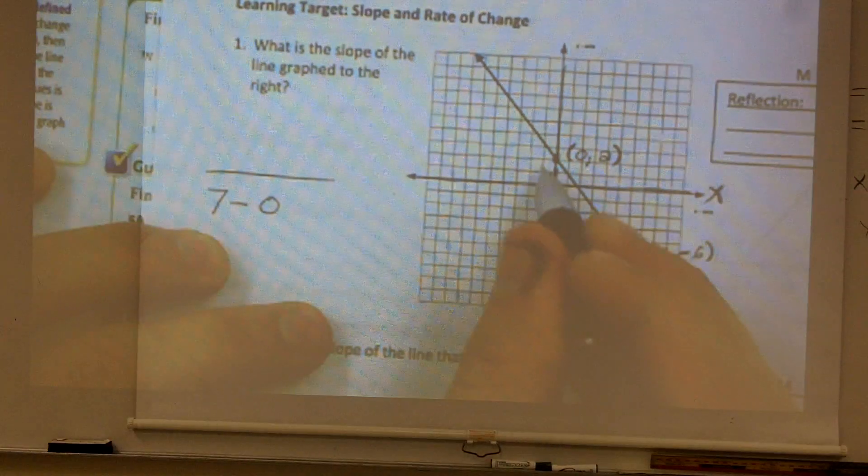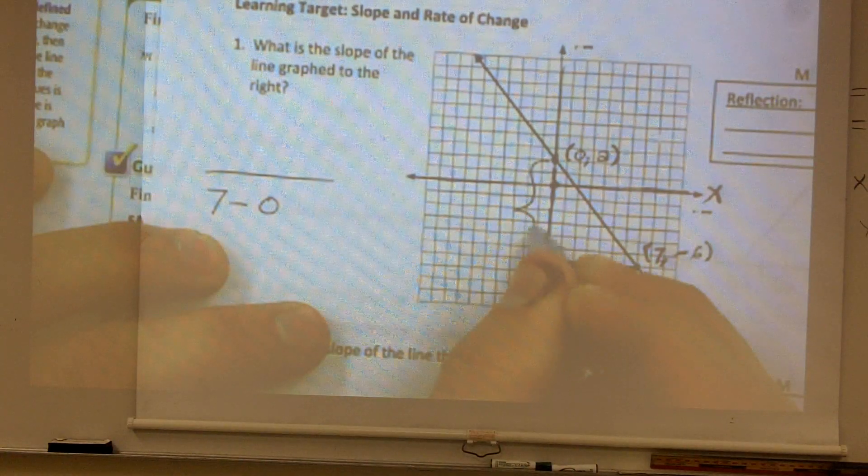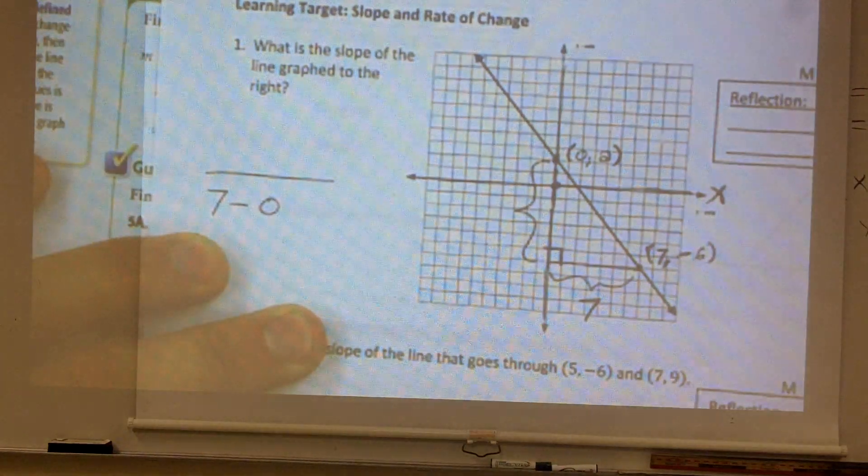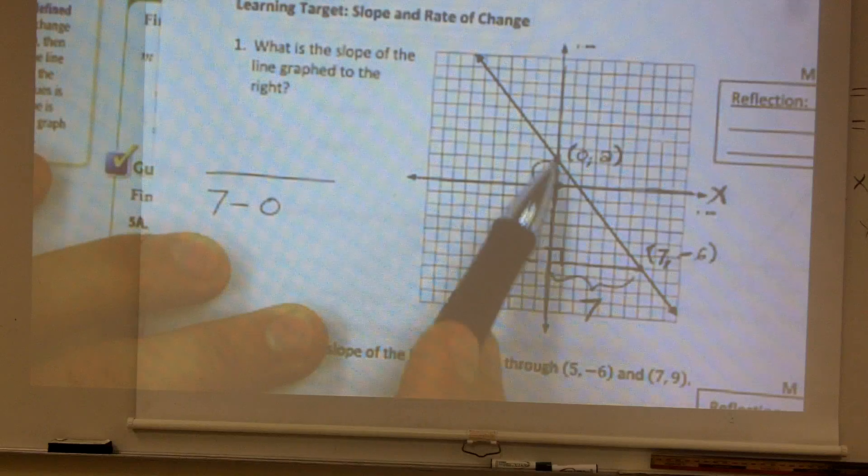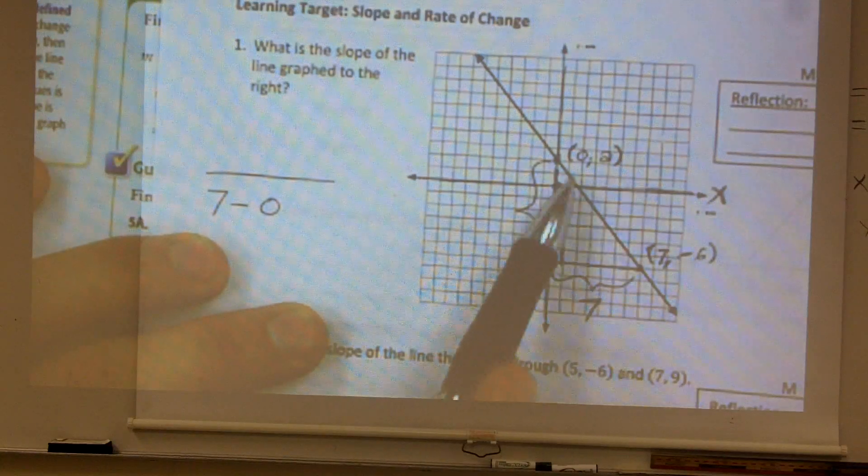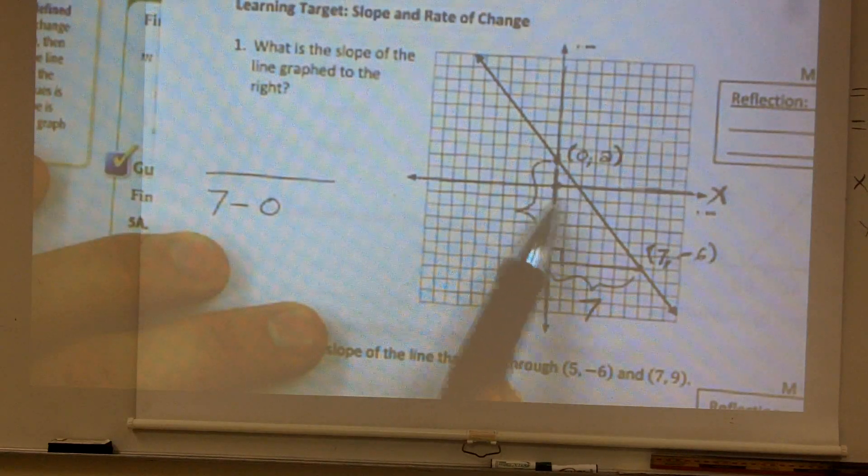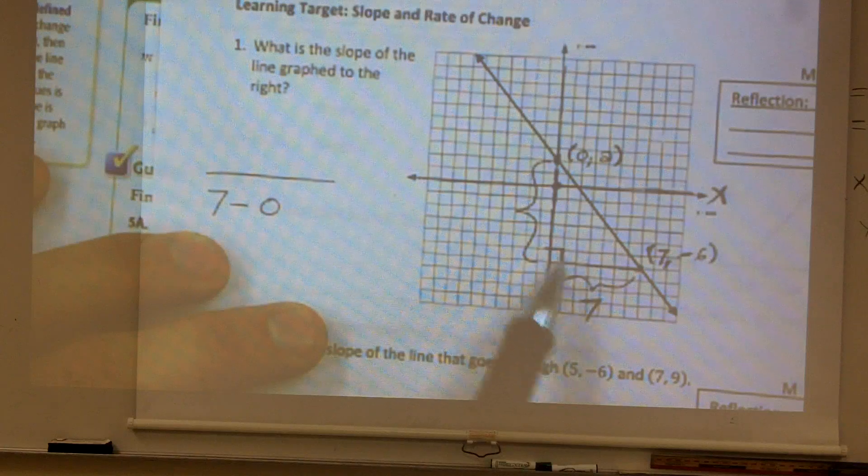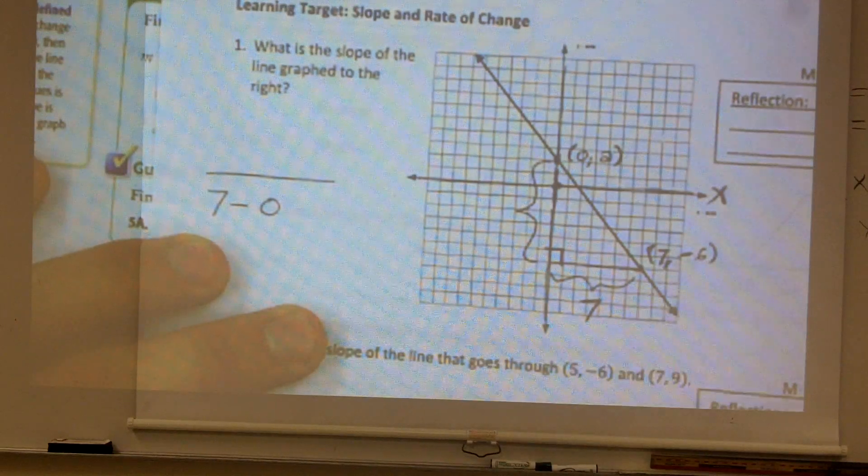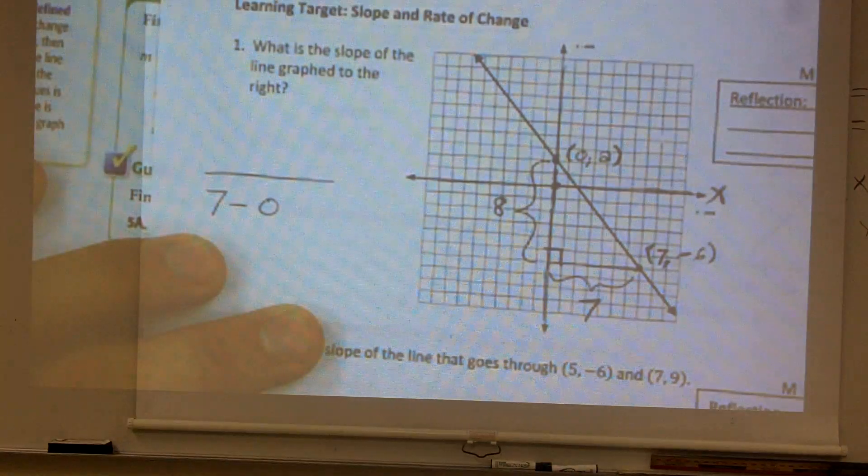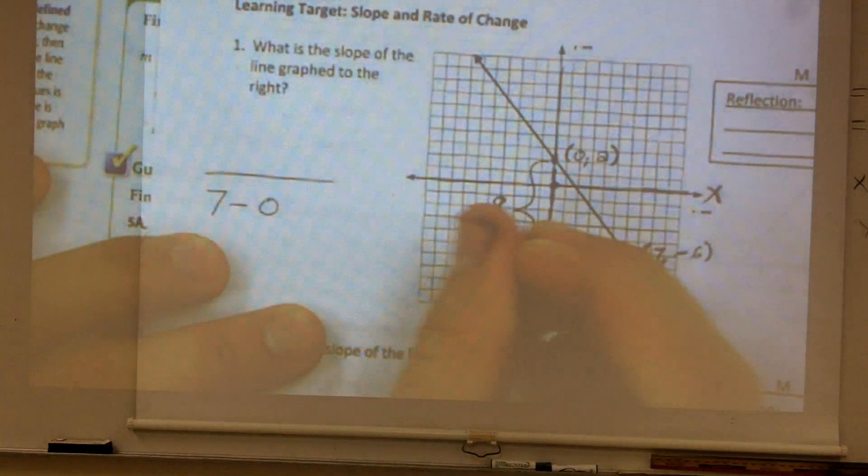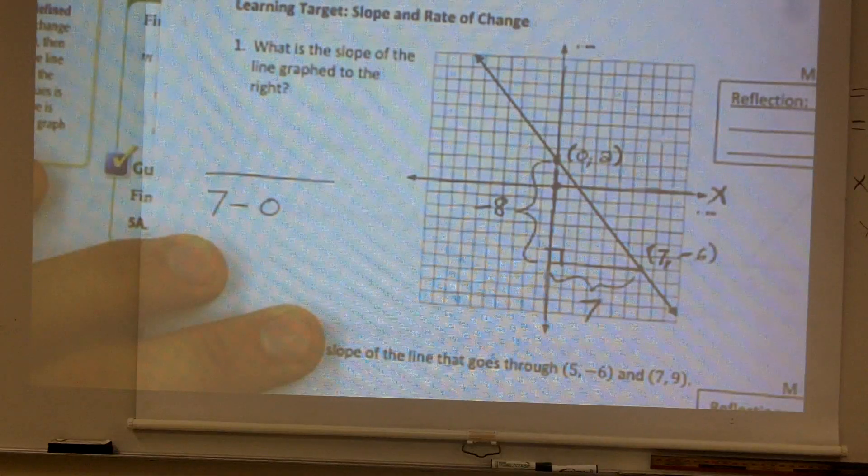Then I need to find the y values. So between these two points, how far did I travel? Now I traveled down, but I traveled how many units? 1, 2, 3, 4, 5, 6, 7, 8 units. So therefore, I traveled 8 units. However, did I travel up or I traveled down? Traveled down, right? So therefore, since I traveled down, it's going to be down 8.